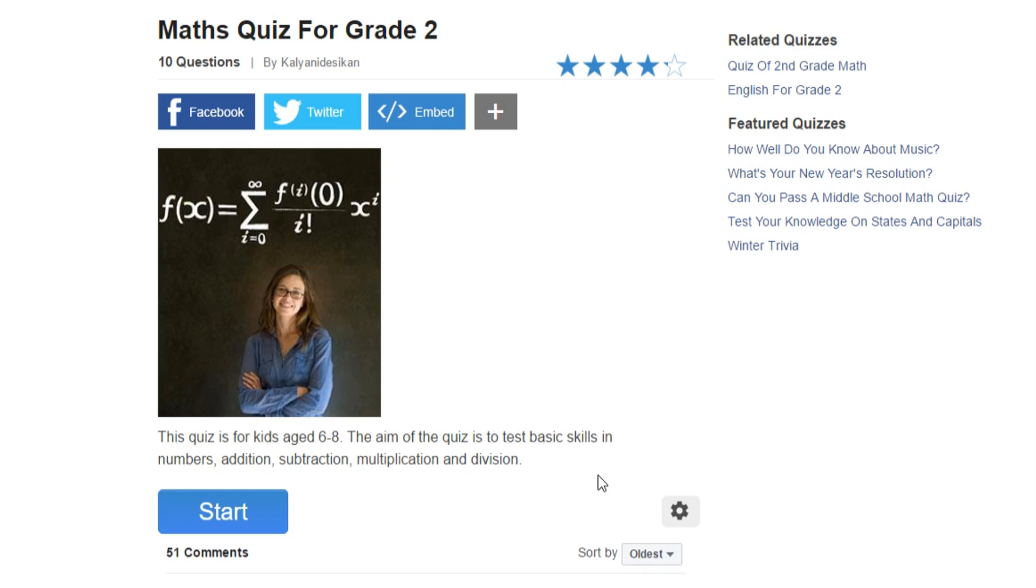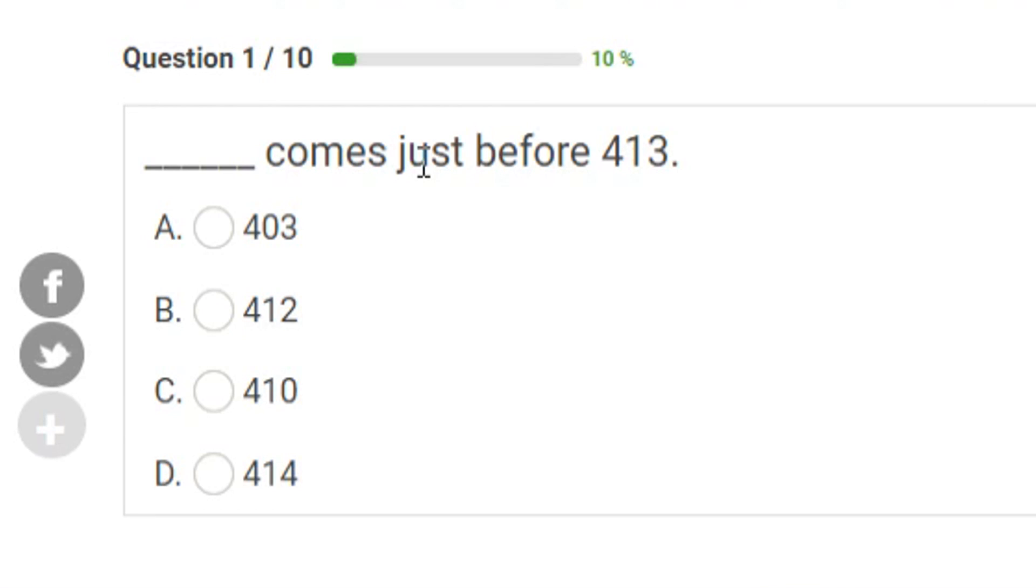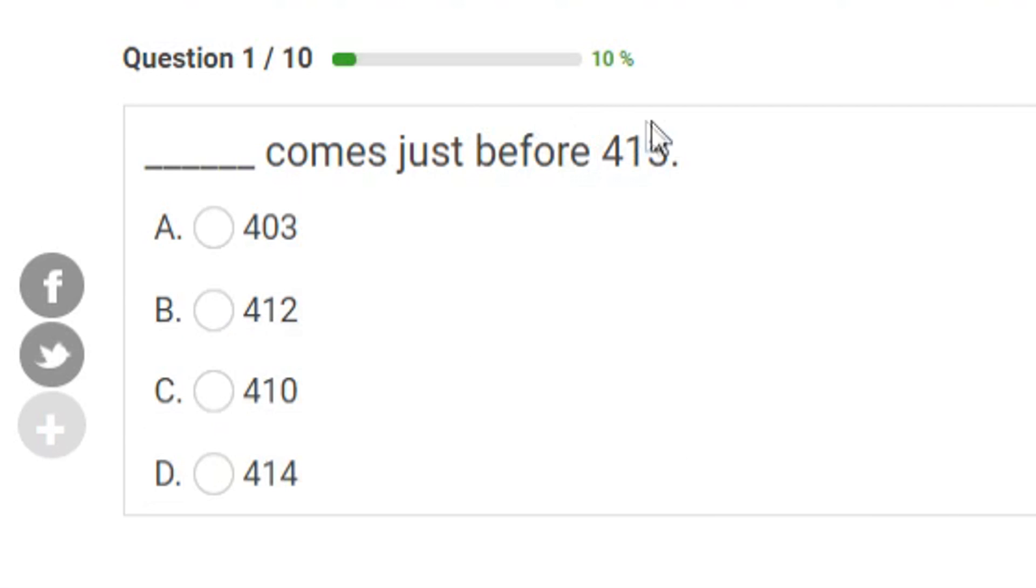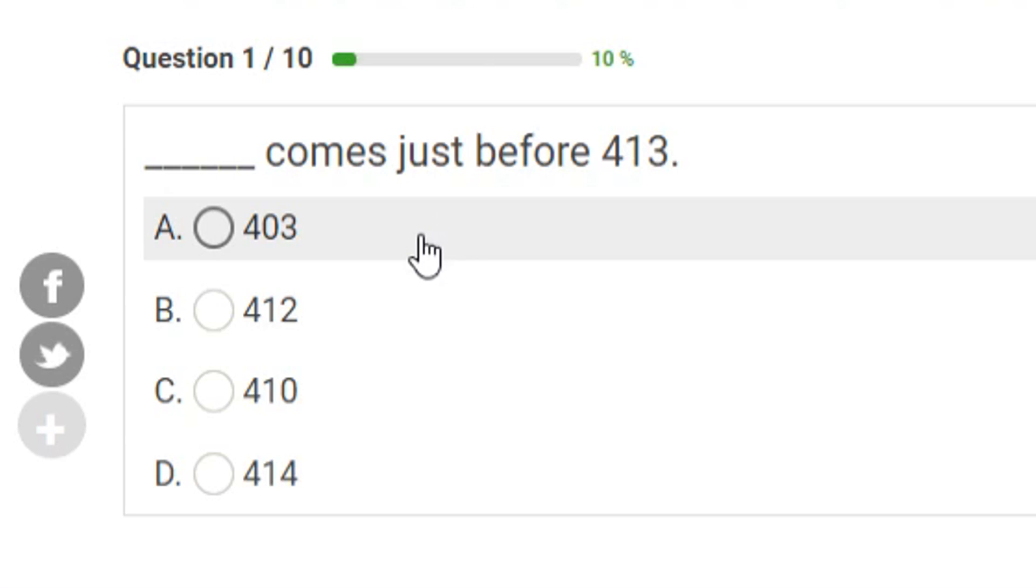Anyways let's go ahead and start the quiz. Alright guys so the first question is blank blank blank comes just before a really big number. Oh my goodness guys I do not know what any of these numbers are. The big number in the question has a 4 and a 3. Letter A also has a 4 and a 3. I am going to pick A because they are so similar.